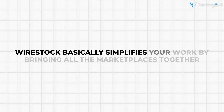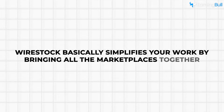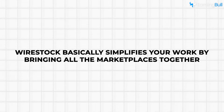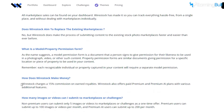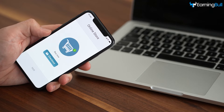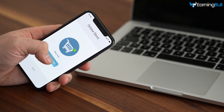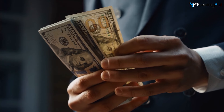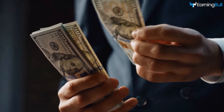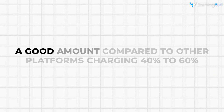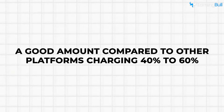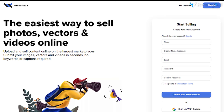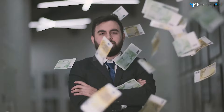Wirestock basically simplifies your work by bringing all the marketplaces together, and the best thing about Wirestock is they only keep 15% of your money when you get paid for selling your images. The remaining 85% belongs to you — a good amount compared to other platforms charging 40% to 60%. Let's jump right into the process of how you can earn money with Wirestock.